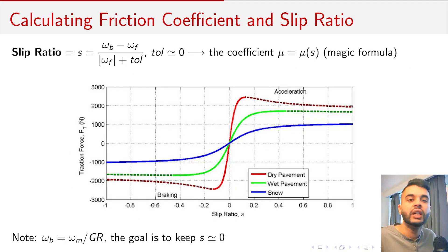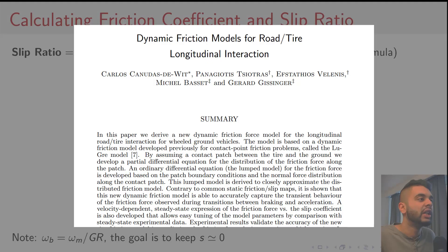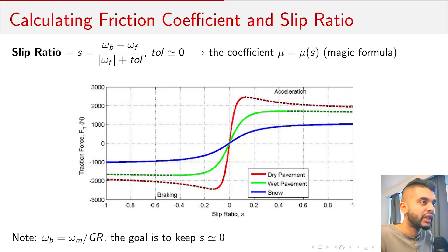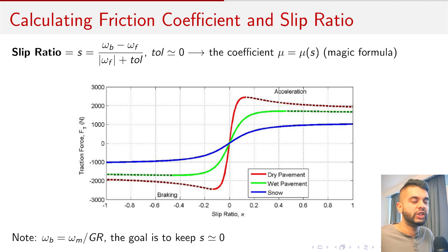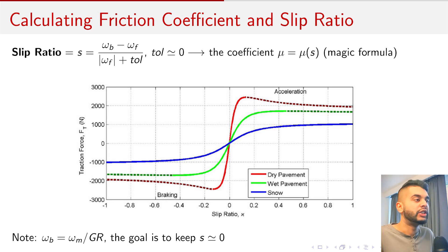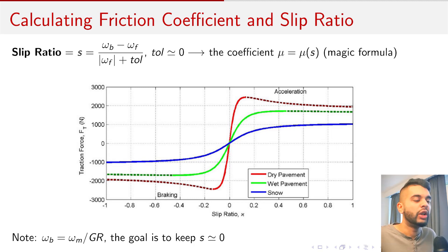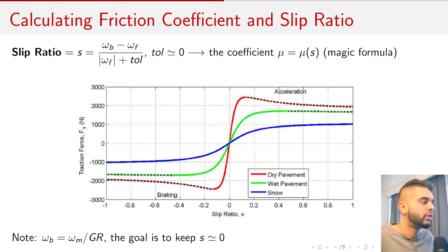The slip ratio is the difference between the speeds of the back wheel and the front wheel, divided by the absolute value of the front wheel speed plus a small value close to zero. You can use omega (angular speed) or v (linear speed), since v equals r times omega. The car is powered on the back wheel, so we put the front wheel in the denominator. Slip is defined only from negative one to one — negative one means complete slipping, which you want to avoid. Keep the slip ratio close to zero so the wheels can roll on the track.